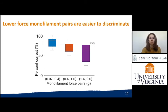Our results show that participants could discriminate only the smallest pair at levels of 75% correct. A decline in discriminability was observed with higher monofilament force.